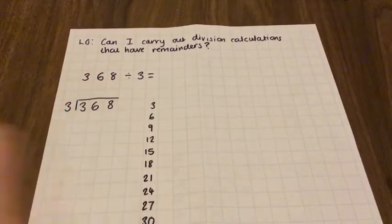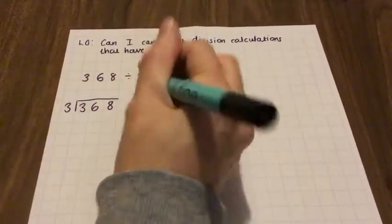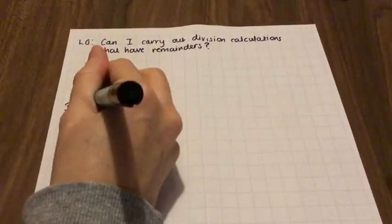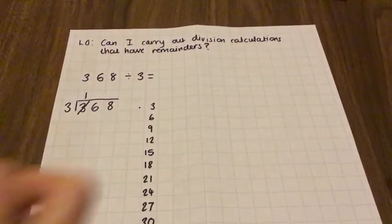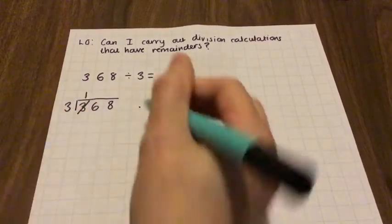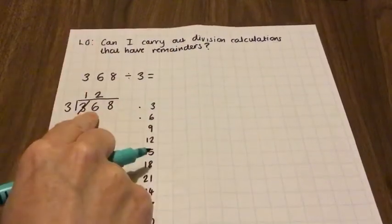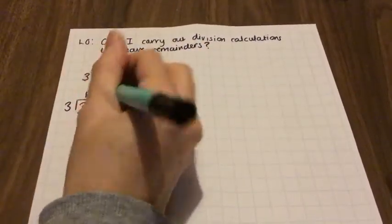How many 3's fit into 3? 1. One 3 fits into 3, and it does so exactly. How many 3's fit into 6? 1, 2. Two 3's fit into 6 exactly.